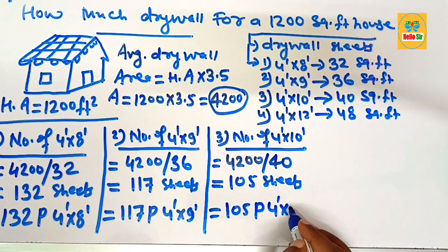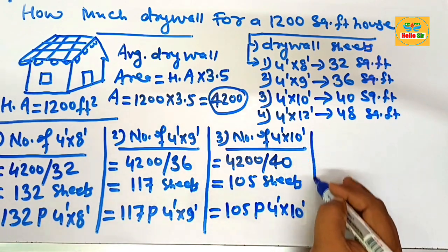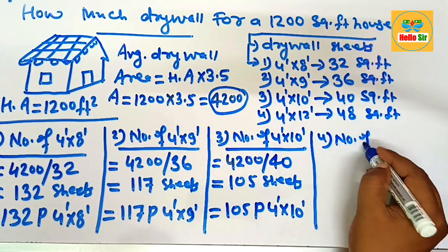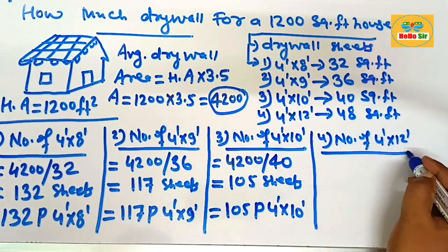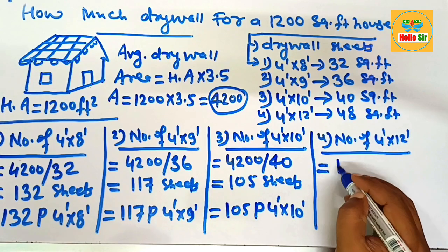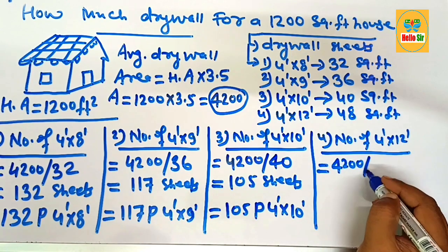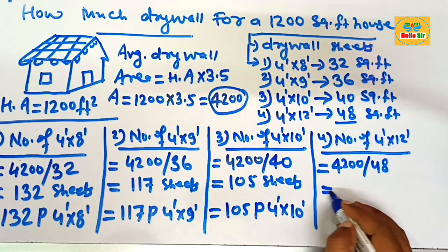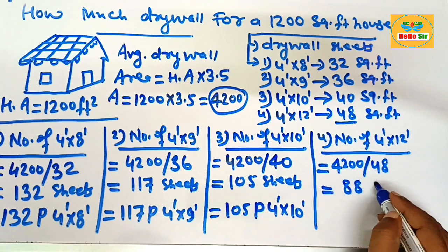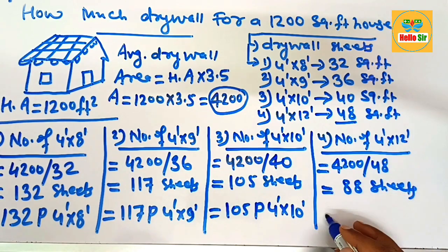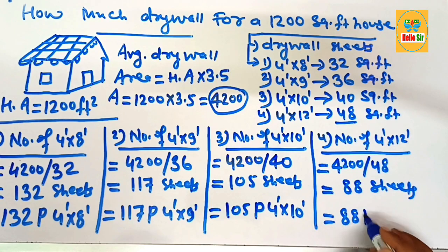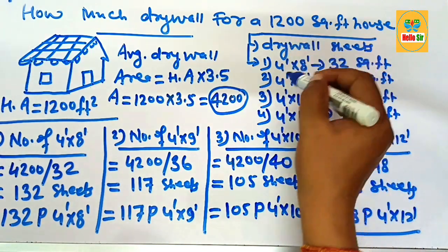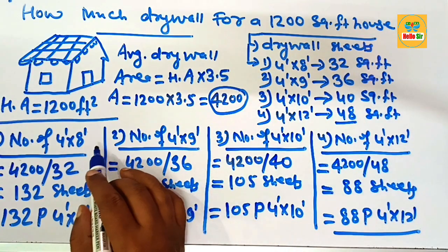Now calculate the number of 4 foot by 12 foot drywall sheets. Divide 4200 by the one piece area of 48. After division, this comes to about 88 sheets. You need approximately 88 pieces of 4 foot by 12 foot drywall sheet for a 1200 square foot house.